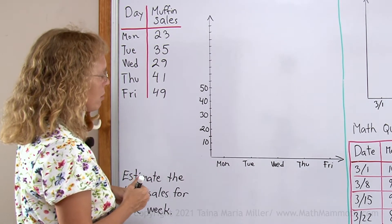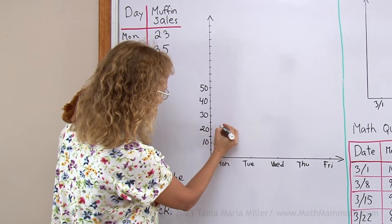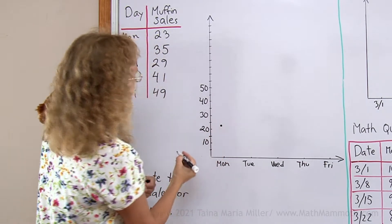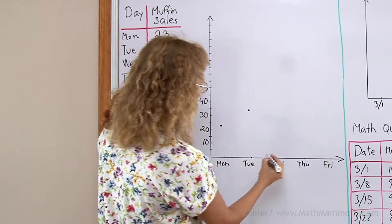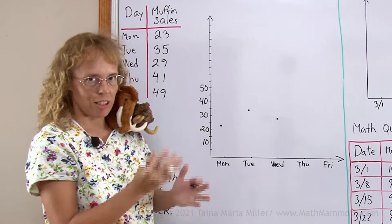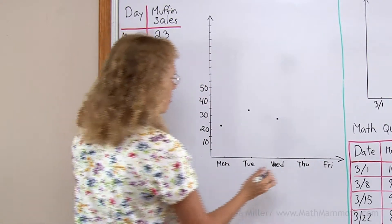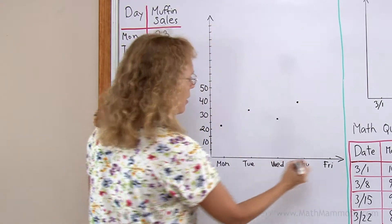Monday, the sales were 23, so I go to Monday and then go up to 23, approximately here. Tuesday, 35. Wednesday, 29. It is much easier to do this if you have actually grid paper. Thursday, 41. And then Friday, 49.